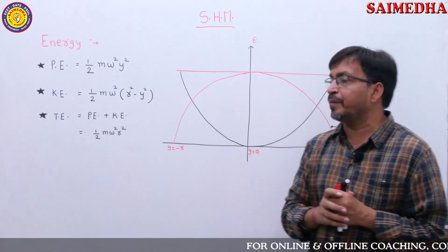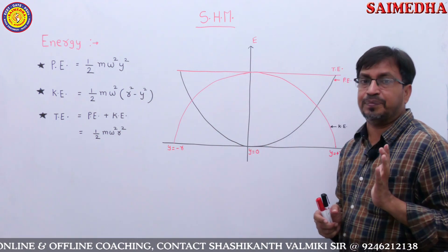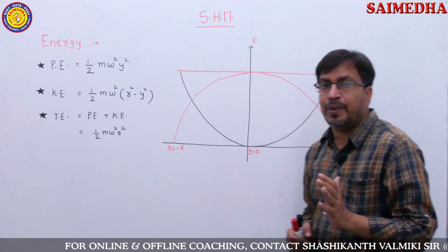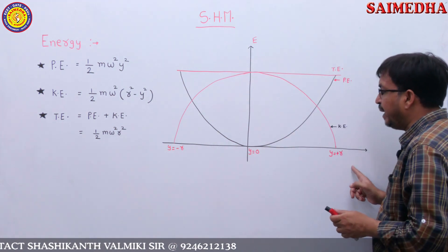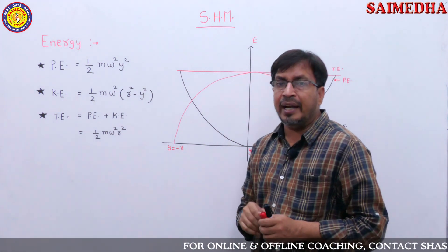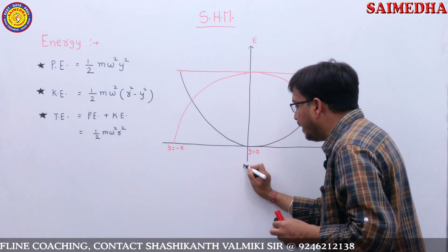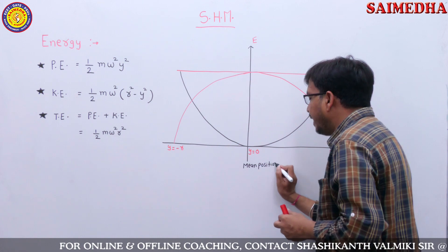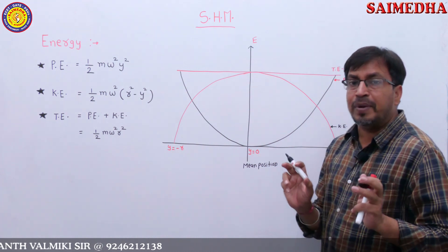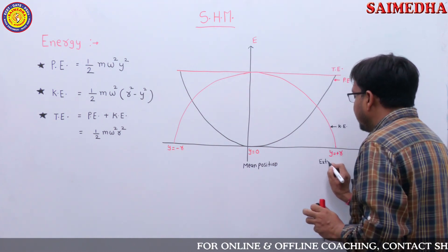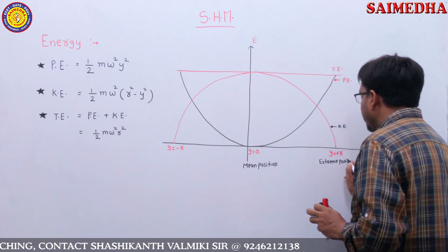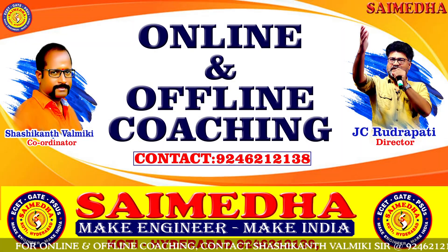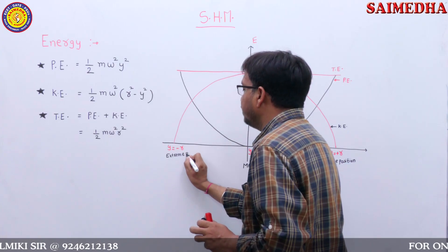All questions can be explained with a single graph — a two-dimensional graph showing the relation between displacement and energy. The x-axis is displacement y and the y-axis is energy. When y equals 0, we consider it the mean position. When y equals plus r or minus r, that is the extreme position. So on the graph we have: extreme position, mean position, and extreme position marked.